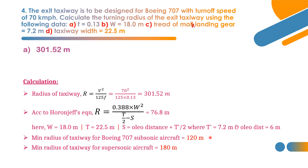A third criterion: minimum radius of taxiway for a subsonic aircraft (Boeing 707) is 120 m; for supersonic aircraft it is 180 m. The three computed values are 301.52 m, 76.8 m, and 120 m. Among the three, the largest value — 301.52 m — must be adopted as the radius of the exit taxiway. So option A is correct.